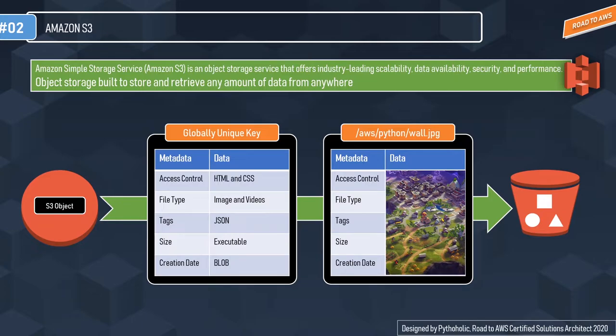As an example, we have a key like 'aws/python/wall.jpg'. Let's suppose this is an object — it has all the metadata information along with the data, which is the image file, and that is what we store in the S3 bucket. The concept is simple: you have a globally unique key that points to an object as its value. When you want to retrieve that particular object, you use the globally unique key to access it.